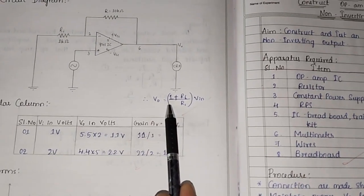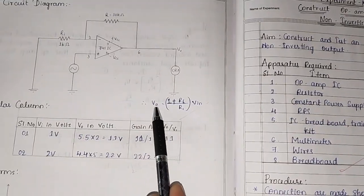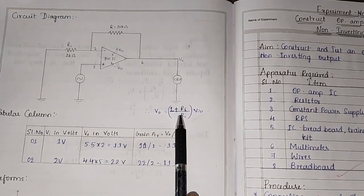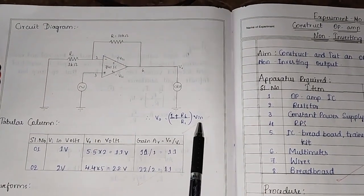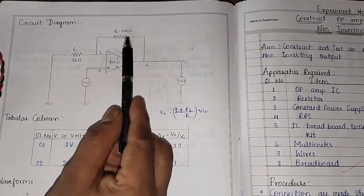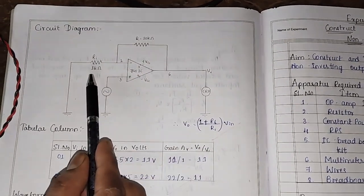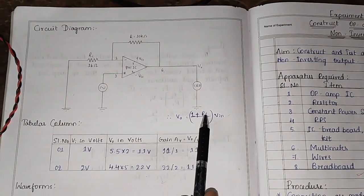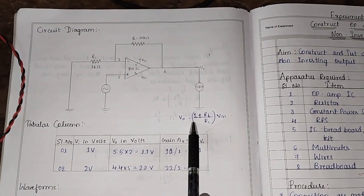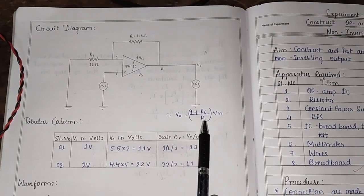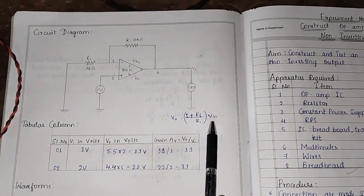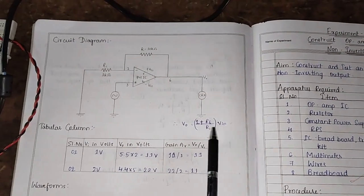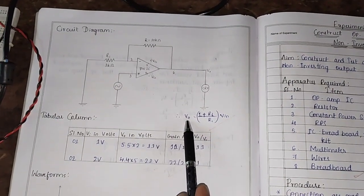In this formula, V0 equals 1 plus Rf divided by R1, multiplied by Vin. Here, Rf is 10 kilo ohms and R1 is 1 kilo ohm. 10 divided by 1 is 10, plus 1 equals 11. That means if you give 1 volt as input, we get 11 volts as output.